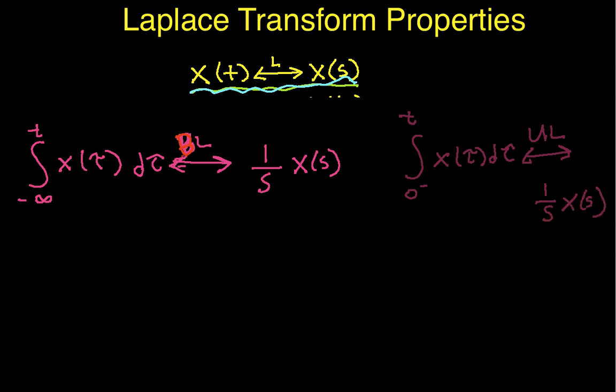So, the issue here is that in order to get the unilateral transform, which is this guy, to look the same as the bilateral transform, I have to go from 0 minus to t because the unilateral transform starts at 0 minus.